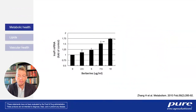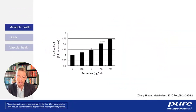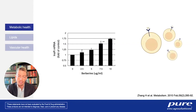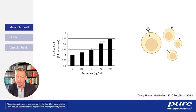Berberine has a variety of mechanisms that converge on supporting healthy glucose responses. One of those mechanisms is supporting the expression of the insulin receptor itself. A study found that berberine supports insulin receptor expression in a variety of human cell lines in a dose-response manner. When berberine was given to humans, the percentage of blood cells expressing insulin receptors increased with supplementation — berberine helps the receptor present itself at the membrane so the body can better respond to glucose in the bloodstream.